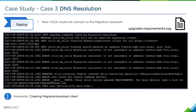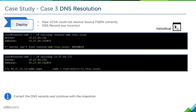On the vCenter server appliance, if we try and do an nslookup of our FQDN, we find that we're not able to actually do a proper nslookup of the FQDN. If we do an nslookup of the IP address we're getting back a different FQDN, so we've got an incorrect DNS entry in our environment.